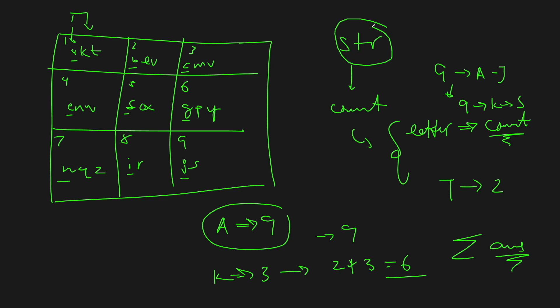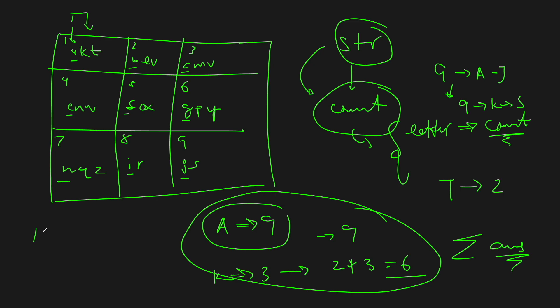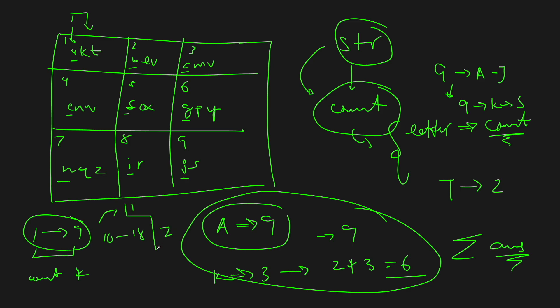To recap: take the string, find the count of each character, loop over the count dictionary in reverse frequency order, and compute the multiplier based on position. If we're within the first nine elements, multiply by one. From index 10 to 18, multiply by two. From 19 onwards up to 26, multiply by three. Sum it all up. It's about 10 lines of code maximum.